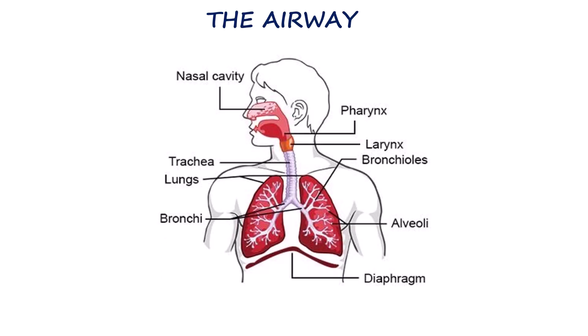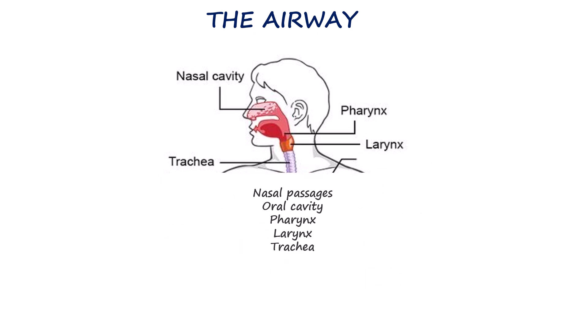Before we manage the airway, we need to understand what it is. The airway is the pathway that carries air from the nose and mouth down to the lungs, including the nasal passages, oral cavity, pharynx, larynx, and trachea. If it isn't clear, gas exchange can't occur properly, and serious problems can develop quickly.